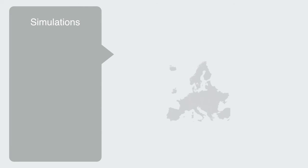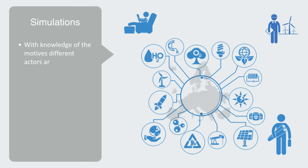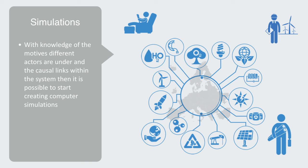Researchers at Delft University in the Netherlands use system dynamics models to try to understand and simulate the behavior of Europe's electrical power grid, as different actors such as household consumers, power generators, and policy makers, all with different agendas, interact to define the state of the system. By understanding the different motives that the different actors are under, and the causal links within the system, it is possible to start creating computer simulations, and alter certain parameters in order to see what happens.